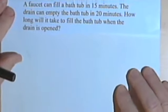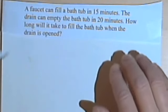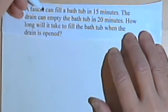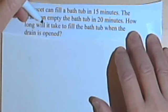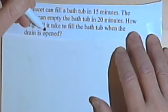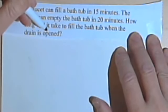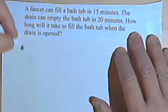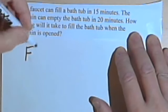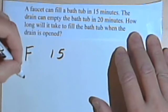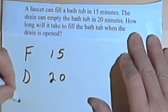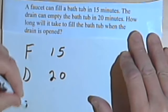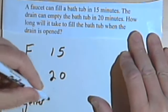Let's look at one more. This is not exactly a work problem, but the solution works the same way. A faucet can fill a bathtub in fifteen minutes. The drain can empty the bathtub in twenty minutes. How long will it take to fill the bathtub when the drain is opened? Okay, so the faucet is fifteen minutes, and the drain is twenty minutes. And we want to know what happens together. So that's going to be x.